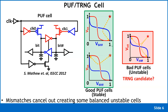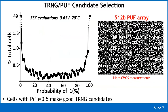The idea is: instead of forcing all PUF cells to behave as PUF cells, let the cells that want to be PUF cells serve as PUF cells, and let the cells that want to behave as TRNG cells serve as TRNG cells. It turns out to be more complicated than that.